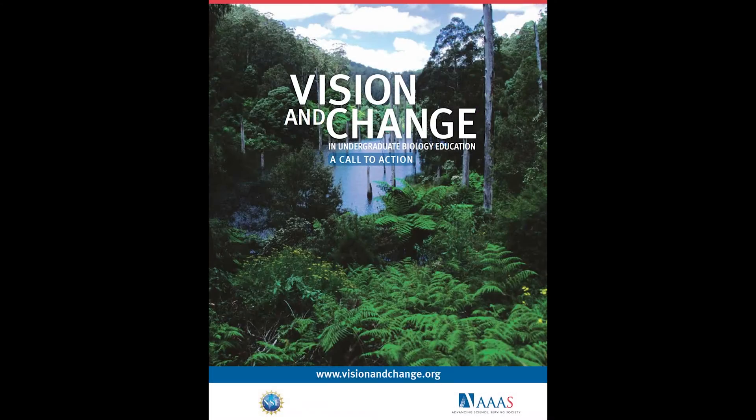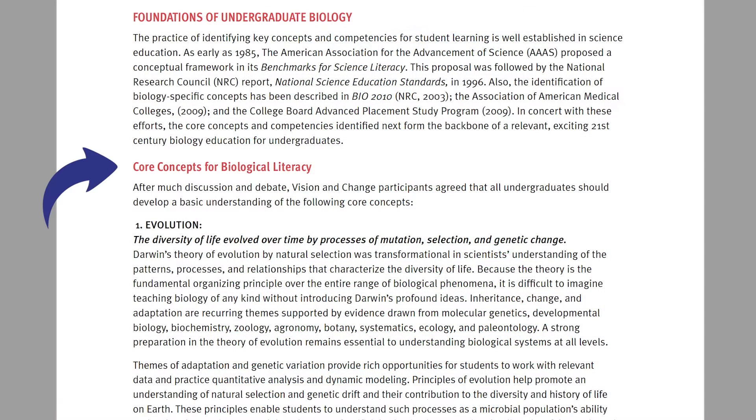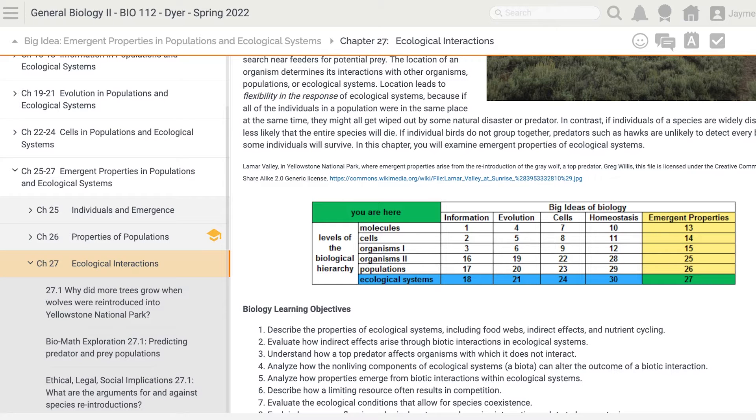It was written to align with Vision and Change, which, among other things, outlined the five core concepts that all undergraduate biology students should develop an understanding of. ICB is organized around those five core concepts. Each one is explored at each organizational level, from the molecular through the ecological.